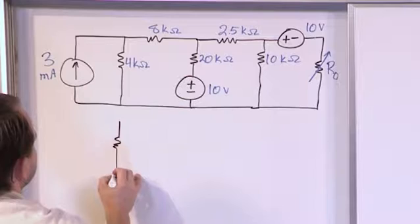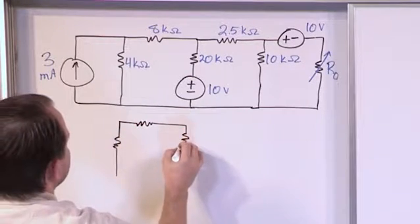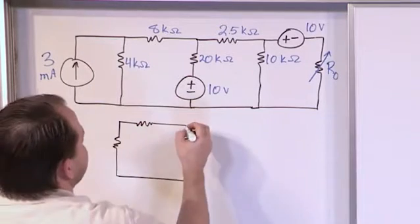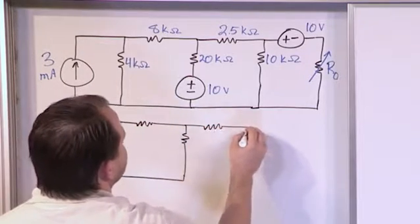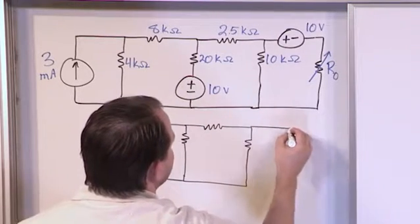The rest of it we're going to draw right below. So here's a resistance here. Here's a resistance on top. Here's a resistance here. This voltage source is now short-circuited, so just put a line there. Here's the resistor there. Here's a resistor there. The voltage source there is short-circuited.